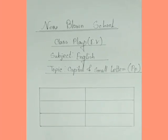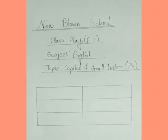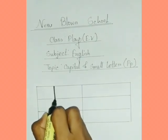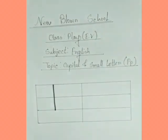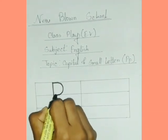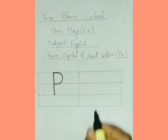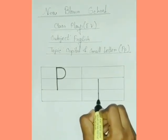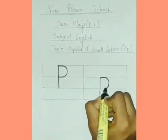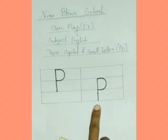Now I am going to teach you how to write capital and small letter P. For writing capital letter P, we start from the top to the middle and draw a straight line, then draw a half round shape. For writing small letter P, we start from the middle to the low and draw a half round shape.